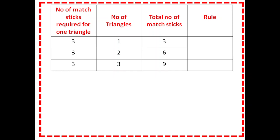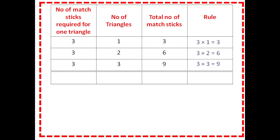In the first row: 3 matchsticks per triangle, 1 triangle, total 3 matchsticks — that is, 3 × 1 = 3. In the second row: 3 × 2 = 6. In the third row: 3 × 3 = 9. In the last row, to make M triangles, we write 3 × M = 3M matchsticks are needed.